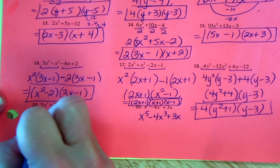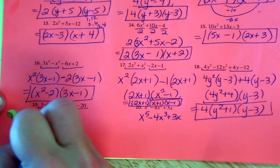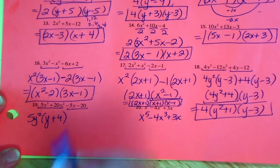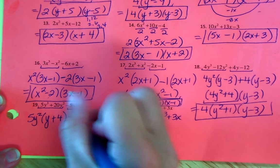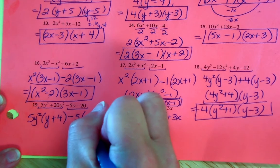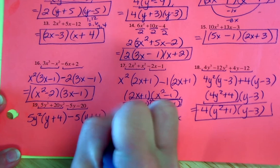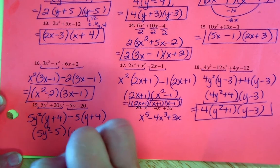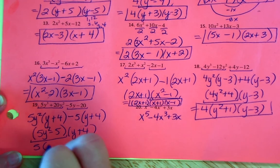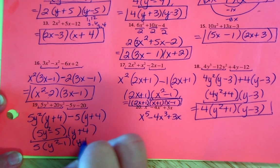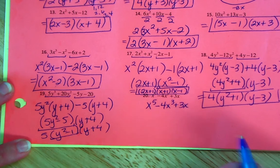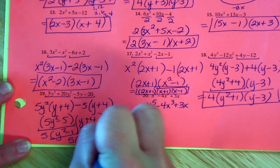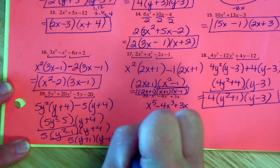Another factoring by grouping with 4 terms. 5 was in 20, so the GCF of the first group is 5y², giving (y + 4). Then minus, with a GCF of 5: dividing negative 20 by negative 5 gives plus 4. Putting the 5y² minus 5 out front — pull out the 5 — we're left with (y² − 1). That's DOTS as well! So the final answer is 5(y + 1)(y − 1)(y + 4).